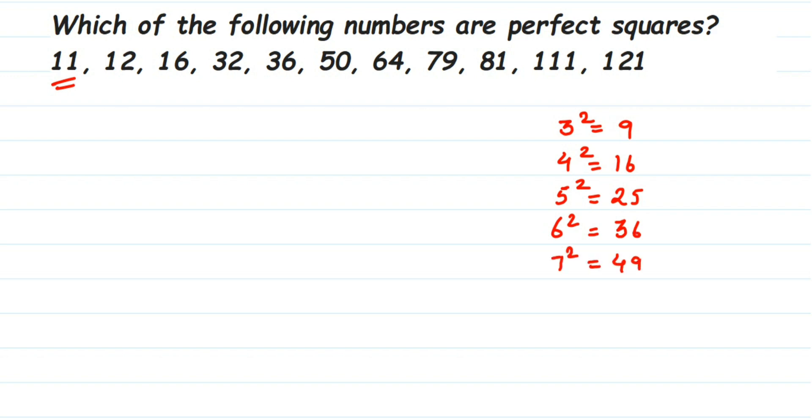If I multiply like 4 into 3, that is 12, it is not a perfect square because I'm not multiplying the same number. Like that, 8 square is 64, 9 square is 81.